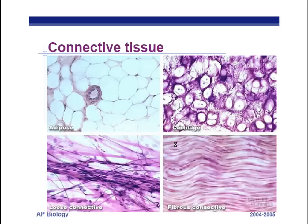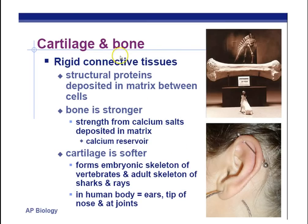Cartilage and bone are rigid connective tissues. Structural proteins are deposited in a matrix between cells. Bone is stronger — its strength comes from calcium salts. Cartilage is softer and forms the embryonic skeleton in humans and the adult skeleton of sharks and rays. In a human body, cartilage makes up your ears, nose tips, and joints. Sharks — the chondrichthyes — are a type of fish with a cartilage skeleton.